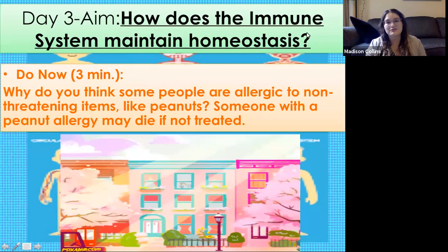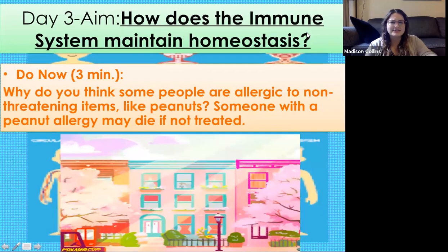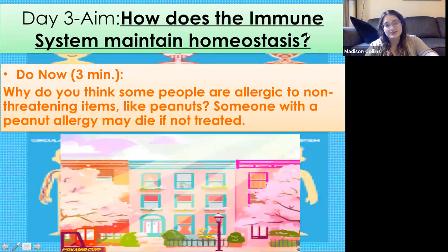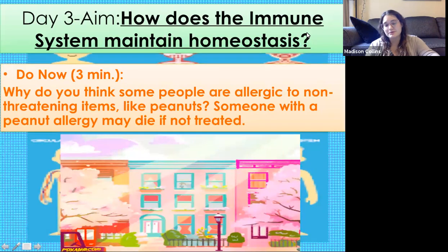Welcome back. This is day three of your immune system. Today we are still talking about how does the immune system maintain homeostasis. But before we get to that, you guys have got a do now. So go ahead and pause this video and tell me, why do you think some people are allergic to non-threatening items like peanuts? Someone with a peanut allergy may die if not treated. Why is this?